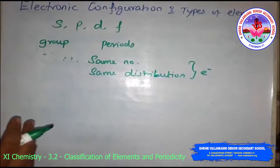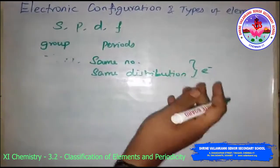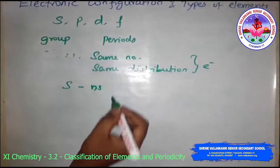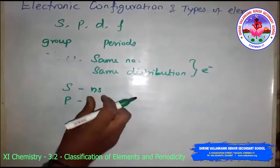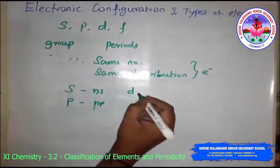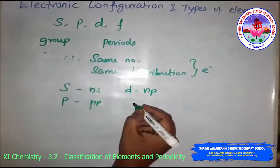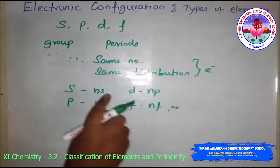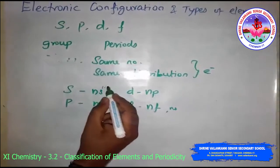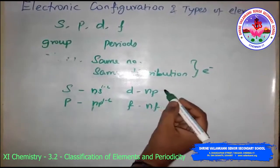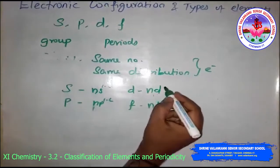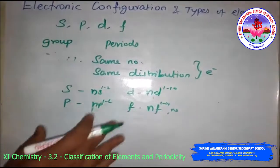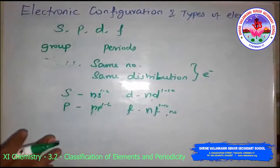For the valence or outermost shell: s-block ends with ns; p-block ends with np; d-block ends with np and nd; f-block ends with nf and ns. The number of electrons ranges from 1 to 2 for s, 1 to 6 for p, 1 to 10 for d, and 1 to 14 for f. This gives us the valence electronic configuration.